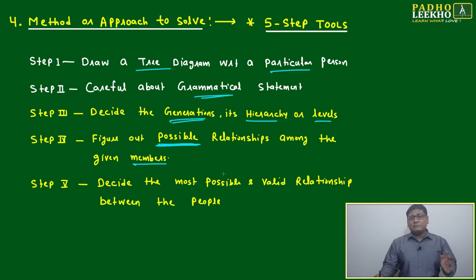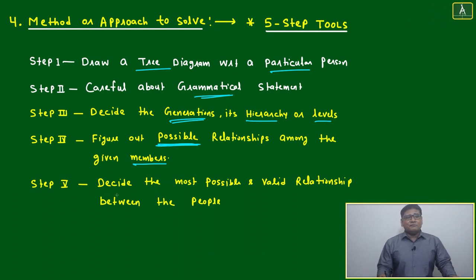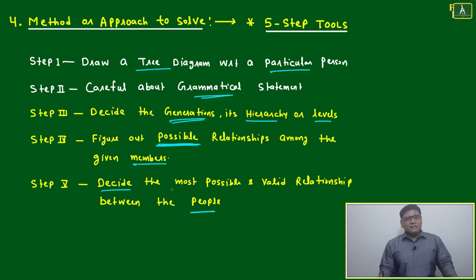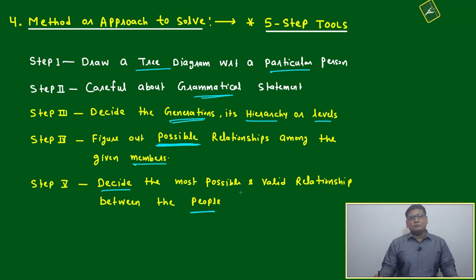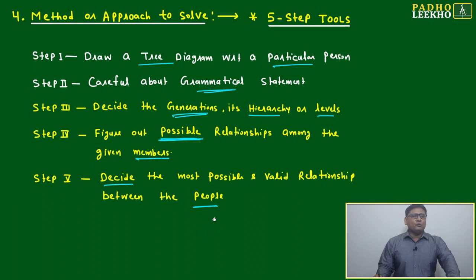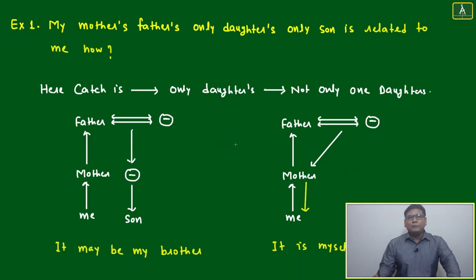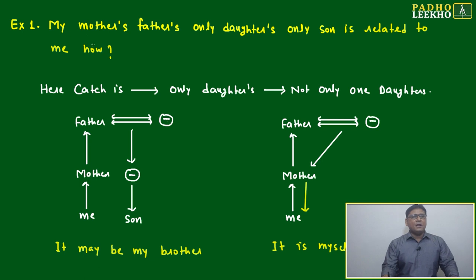It may be between two different generations, or the same generation, or whatever is there. Step five: decide the most possible and valid relationship between the people — based on the possible relationships, decide which one is most valid. These five steps we can apply — let us look at example number one to verify this.